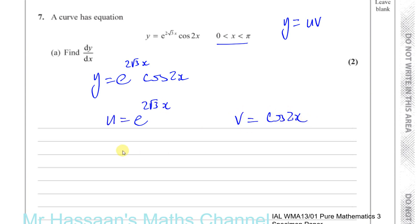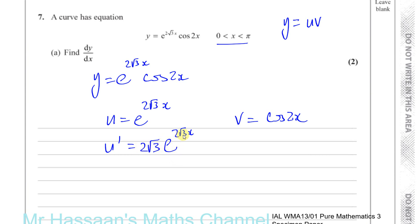To use the product rule, the first thing I have to do is differentiate each of these separately. If I differentiate e to the power of something, it remains as e to the power of the same thing. But the exponent has a function inside it — 2 root 3 times x — so I multiply by the differential of what's inside. The differential of e to the power of something is itself, then multiplied by 2 root 3. So u dash is 2 root 3 times e to the power of 2 root 3x.